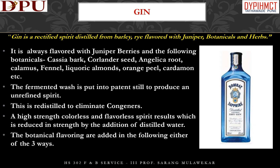Gin is a rectified spirit distilled from barley and rye, flavored with juniper botanicals and herbs. It is always flavored with juniper berries and the following botanicals: cassia bark, coriander seed, angelica root, calamus, fennel, licorice, almonds, orange peel, cardamom, etc. The fermented wash is put into a patent still to produce an unrefined spirit, which is redistilled to eliminate congeners, producing a high-strength colorless and flavorless spirit. This is reduced in strength by the addition of distilled water. The botanical flavorings are added in one of three ways.